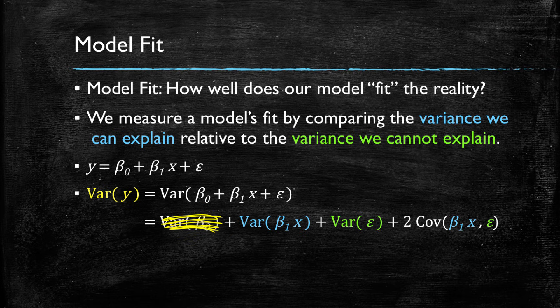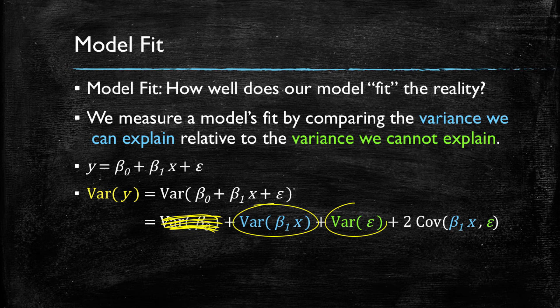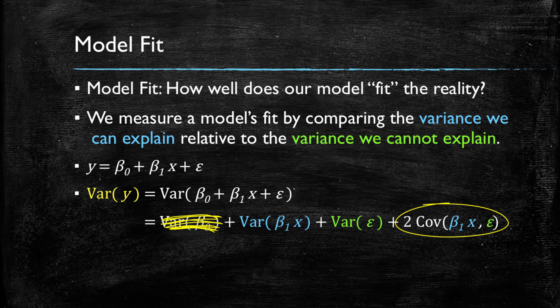Then we have the explained variance by the beta times X and the variance of the error term. And we additionally have a covariance of these two terms. This is how we compute the variance of the sum of two random variables. However, let's recall what these two terms are. One is the variance we can explain and whatever is left is what we cannot explain. Meaning that the two terms are not related to each other at all, by definition.